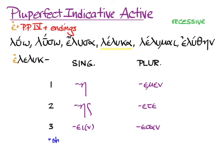The default translation for the Pluperfect Indicative Active is 'she had verbed,' and that is what gives us past time and completed aspect in English — she had verbed. The Pluperfect, then, is about actions that are over and done with from the point of view of some time in the past.